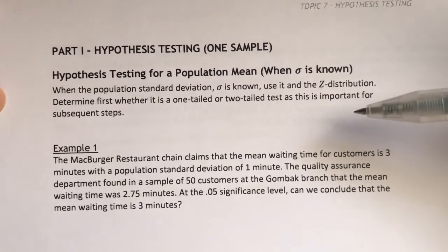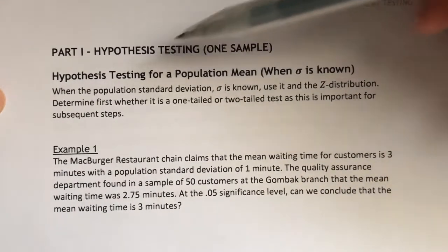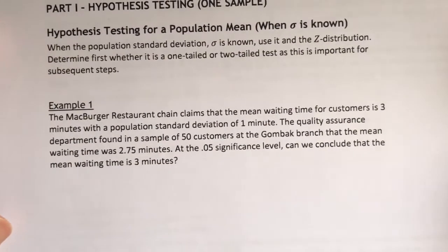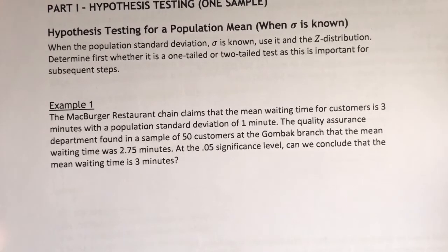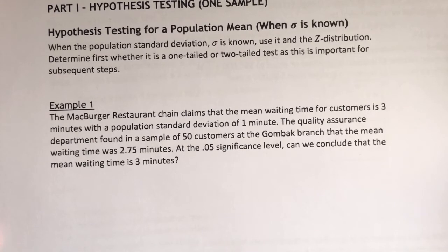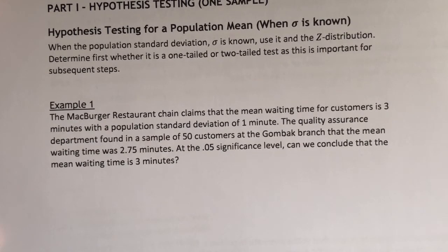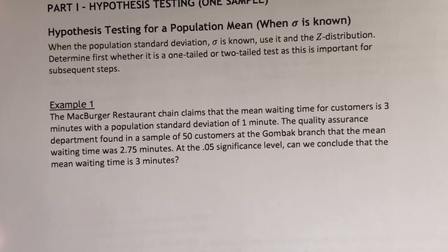For our first example, we're going to do a hypothesis test for a population mean when the population standard deviation is known. The McBurger restaurant chain claims that the mean waiting time for customers is 3 minutes, with a population standard deviation of 1 minute. The Quality Assurance Department found in a sample of 50 customers at the Gombak branch that the mean waiting time was 2.75 minutes. At the 5% significance level, can we conclude that the mean waiting time is 3 minutes?